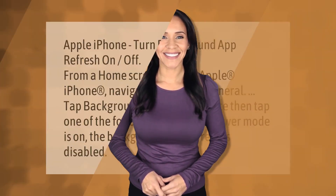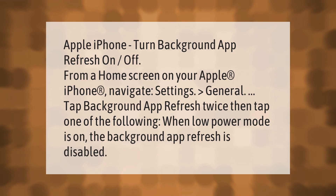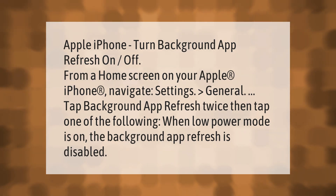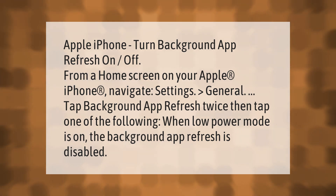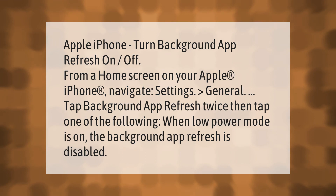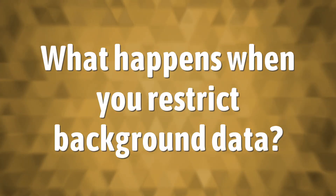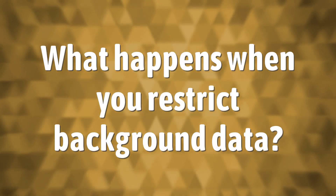Apple iPhone: turn background app refresh on or off. From a home screen on your Apple iPhone, navigate to Settings > General, then tap Background App Refresh twice. When Low Power Mode is on, background app refresh is disabled.